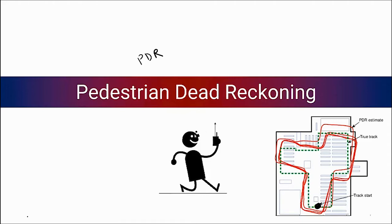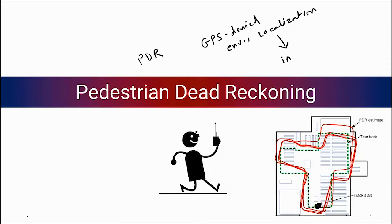IMU has an immense application in localization particularly in GPS-denied environments. We discussed a lot about GPS-denied environments and localization there, and in particular we are interested in infrastructure-free localization. In this case you are not deploying any hardware in the building — the only infrastructure is in your pocket — so you don't have to do any deployment or calibration in the building. There is an immense application of PDR in such cases.